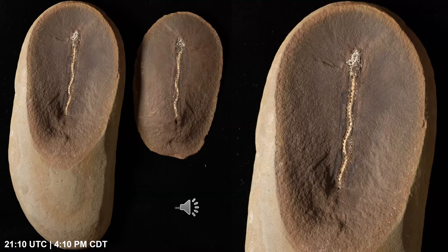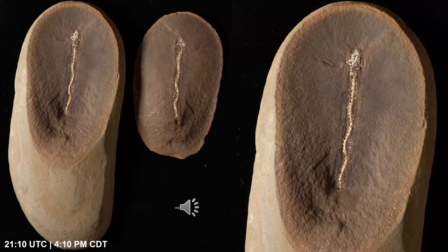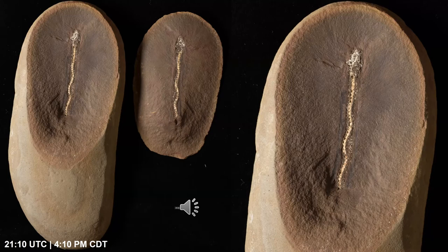The late Carboniferous Mazon Creek Lagerstätte is exceptional for the diversity and abundance of preserved fauna and flora found within siderite concretions, which are made of iron carbonate mineral. These nodules need to be split or cracked to expose the fossil within them. The nodules occur in a rock unit known as the Francis Creek Shale, which lies above the Colchester coal beds in northeastern Illinois. The Francis Creek Shale is of Middle Pennsylvanian age, approximately 310 million years old. The Mazon Creek area in Illinois was near the equator when today's continents formed one large land mass.